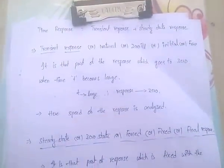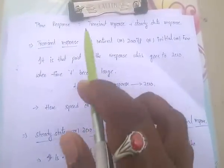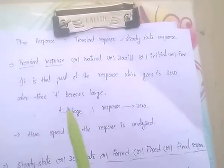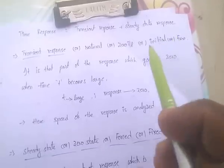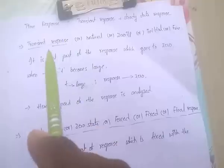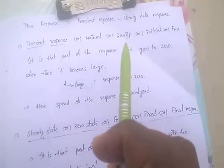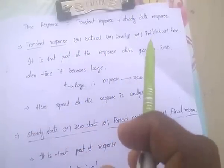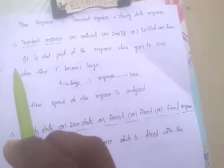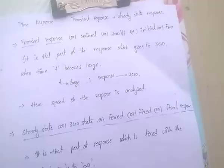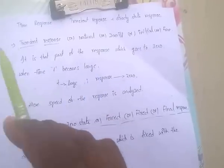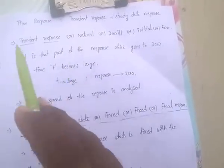The total time response equals a combination of transient response plus steady state response. Transient response is also called natural response, zero input response, initial response, or free response. Transient response is that part of the response which goes to zero when time t becomes large.